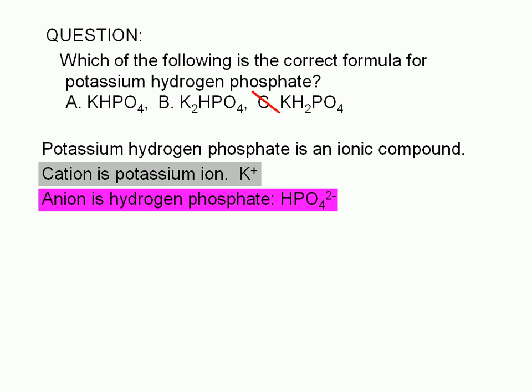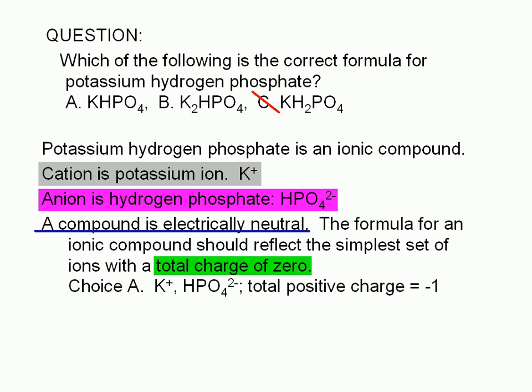So how do we decide between choice A and B? A compound is electrically neutral. The formula for an ionic compound should reflect the simplest set of ions with a total charge of 0.